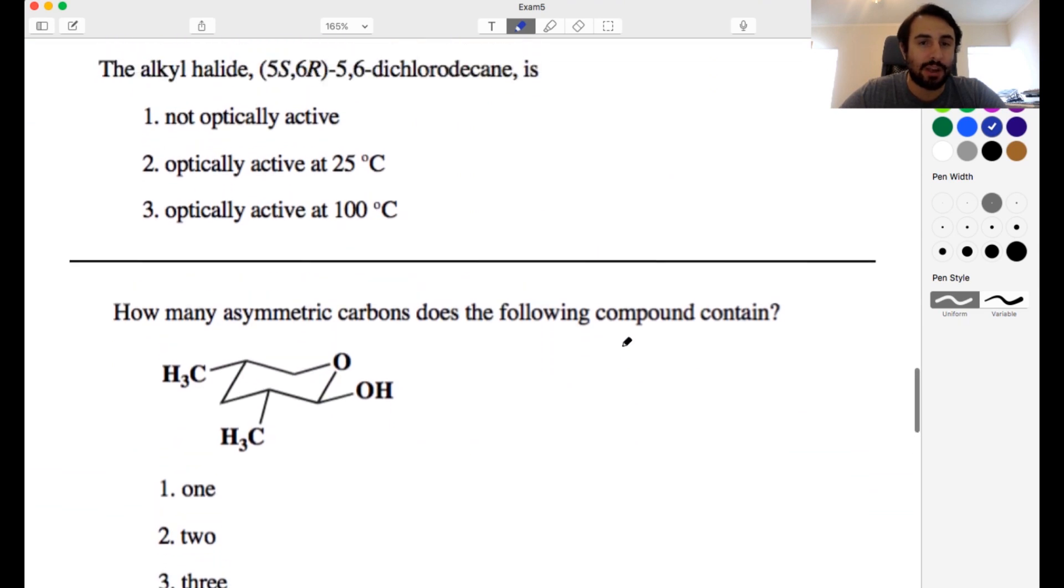Okay, a couple of quick multiple choice. So the alkyl halide 5S,6R 5,6-dichlorodecane is, and we have some options here. So, first of all, we got to draw it. One, two, three, four, five, six, seven, eight, nine, ten. So here's five, and we have, okay, we have a chlorine on, we have chlorines on each of these, but we got to know whether it's dash or wedge. So 5S, 5S means that it's got to be a wedge,